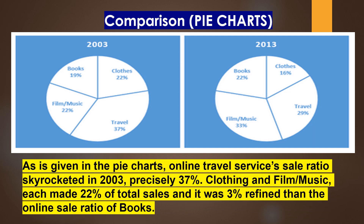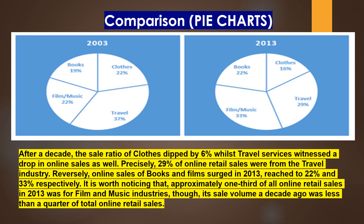As is given in the pie charts, online travel services sale ratio skyrocketed in 2003, precisely 37%. Clothing and film or music each accounted for 22% of total sales, which was 3% higher than the online sale ratio of books. After a decade, the sale ratio of clothes dipped by 6%, whilst travel services witnessed a drop in online sales as well — precisely 29% of online retail sales were from the travel industry. Reversely, online sales of books and films surged in 2013, reaching 22% and 33% respectively. It is worth noticing that approximately one third of all online retail sales in 2013 was for the film or music industry, though its sale volume a decade ago was less than a quarter of total online retail sales.